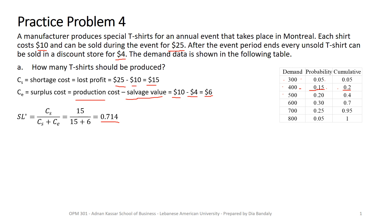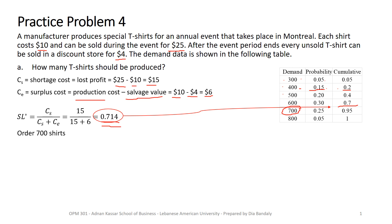Now we compare our service level of 0.714 against the cumulative probabilities and see where it falls. It sits between two values. As advised when learning this model, we always opt for the quantity that gives a cumulative probability higher than the one we found, if it does not match exactly. So we go for a quantity of 700, which will be our order quantity.